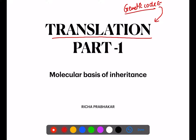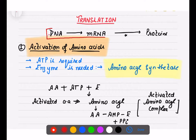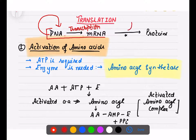In the translation process, we also need tRNA, which I'll discuss. But first, let's go step by step through how translation takes place. As the central dogma states: DNA to DNA is replication (already finished), DNA to mRNA is transcription, and the last step — mRNA to protein formation — is called translation.